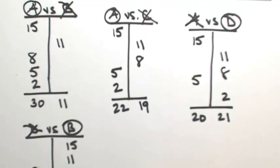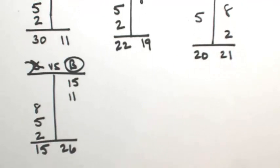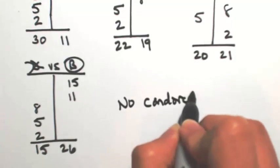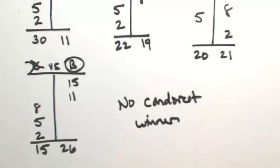So if you notice, I crossed out every single candidate. A is crossed out, B, C, D, everyone is crossed out. So nobody beats all of its competitors. So that means that there is no Condorcet winner. So that is a possibility. You may not have a Condorcet winner.